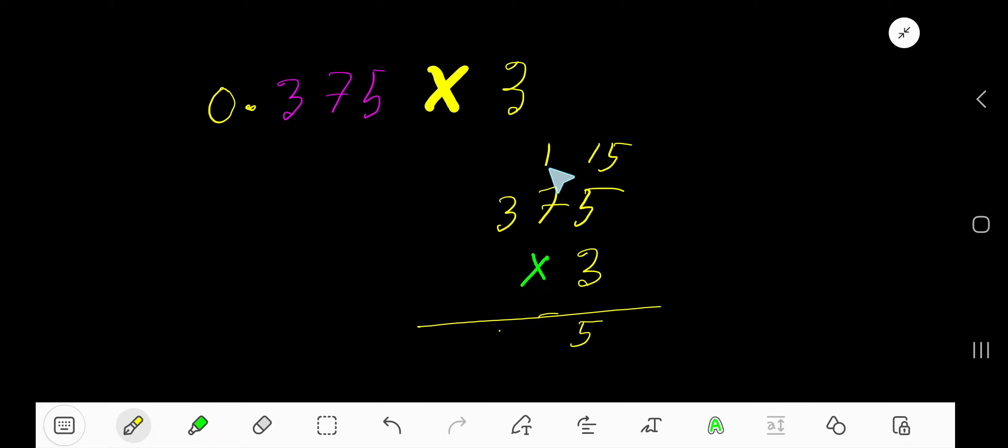Then 3 times 7 is 21, plus 1 is 22. Bring down 2, carry 2 to the next column. Then 3 times 3 is 9, plus 2 is 11. Write 11, so we have 1125.